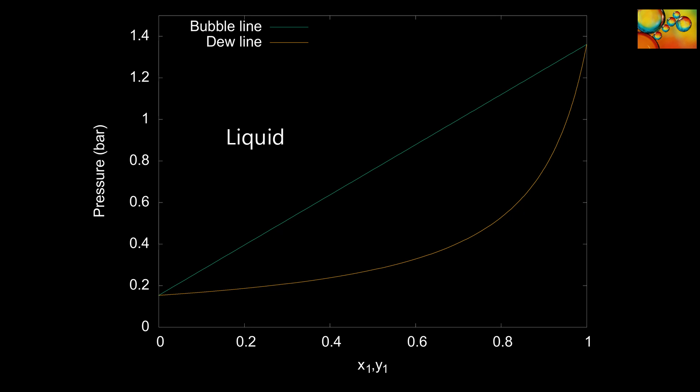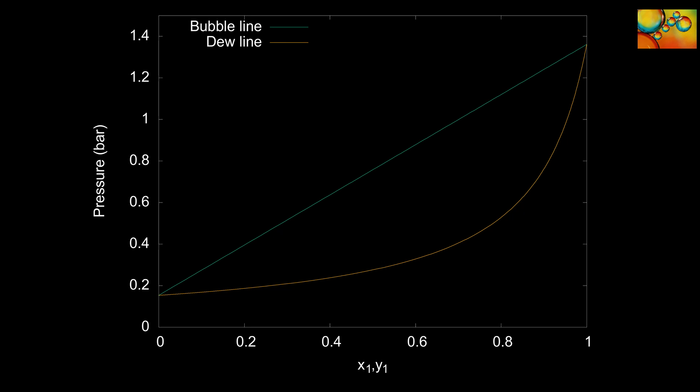Neglecting the possibility of solid phase formation, if a system is at a sufficiently high pressure it will be a liquid, and if the pressure is sufficiently low it will be a vapor. Between these two extreme conditions, there must be a region where the system has two phases — a vapor and a liquid phase in equilibrium. The easiest way to explain the connection between the vapor region, the liquid region, the vapor-liquid region, and the bubble and dew point lines is to carry out some mental experiments.